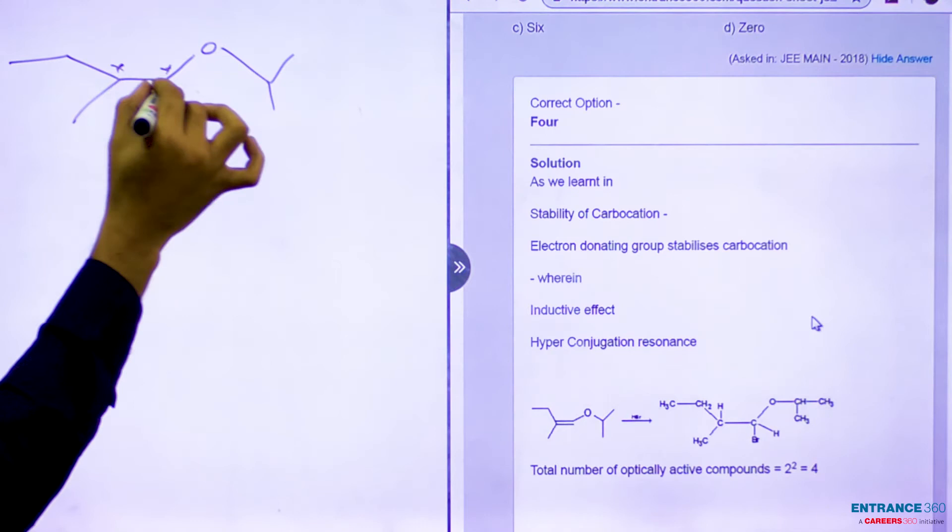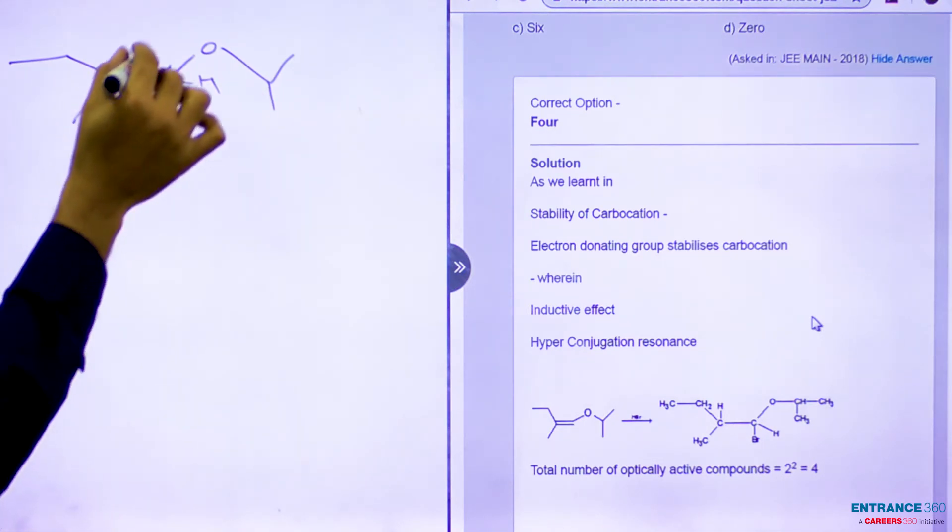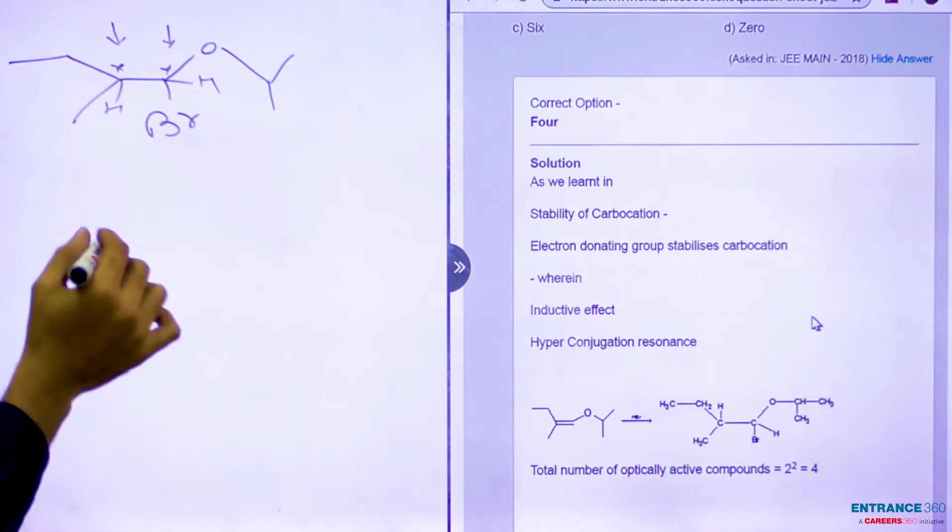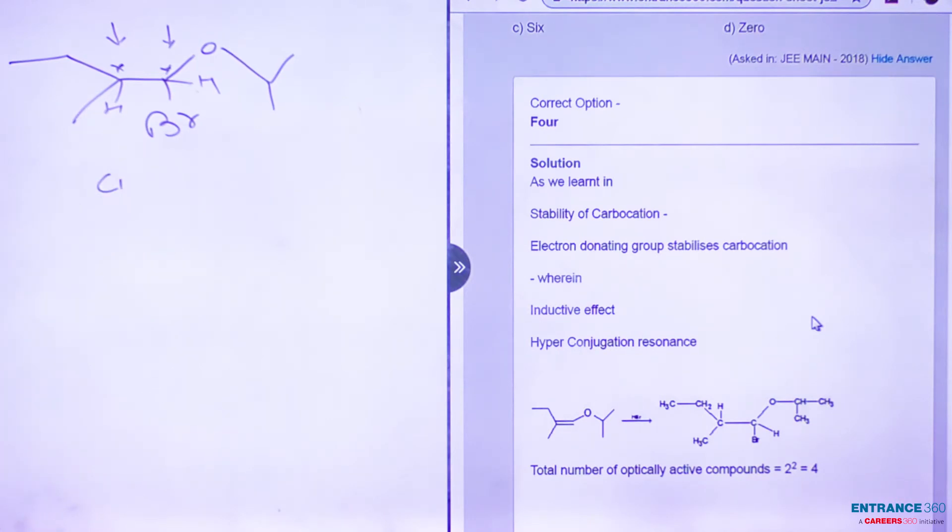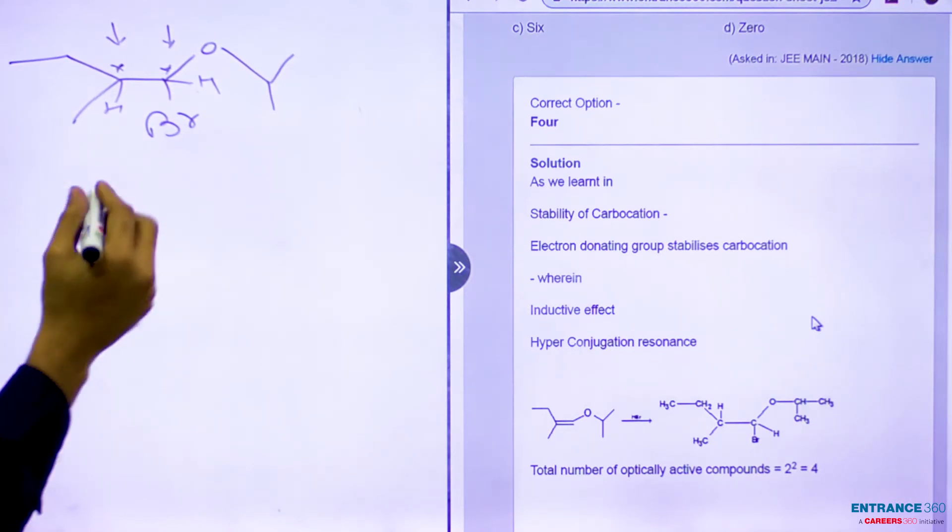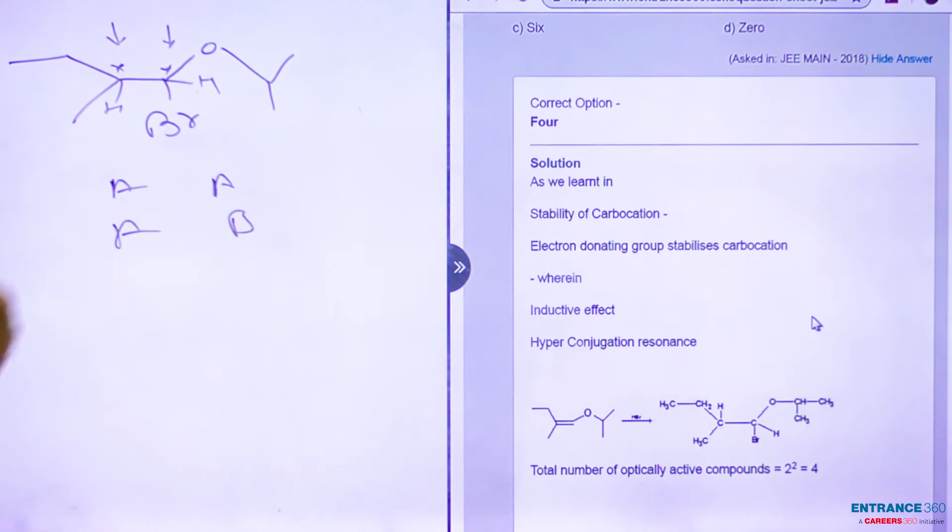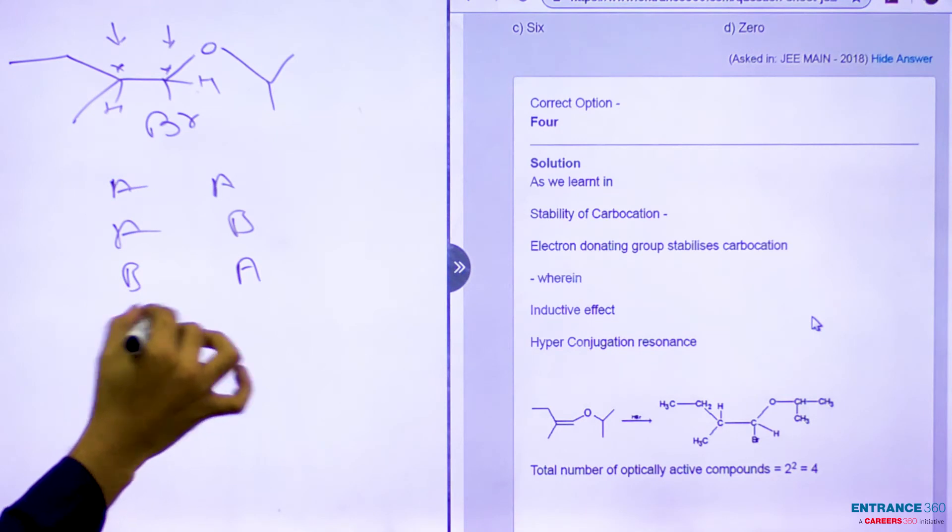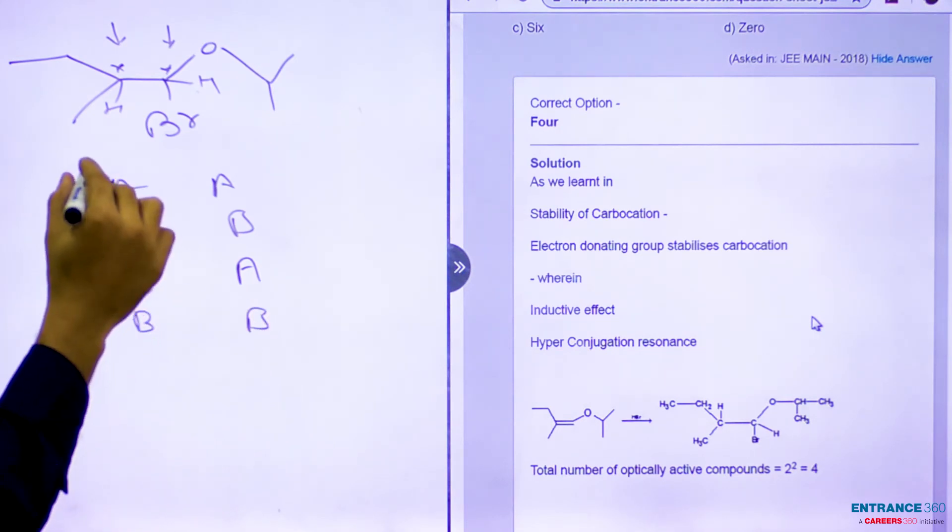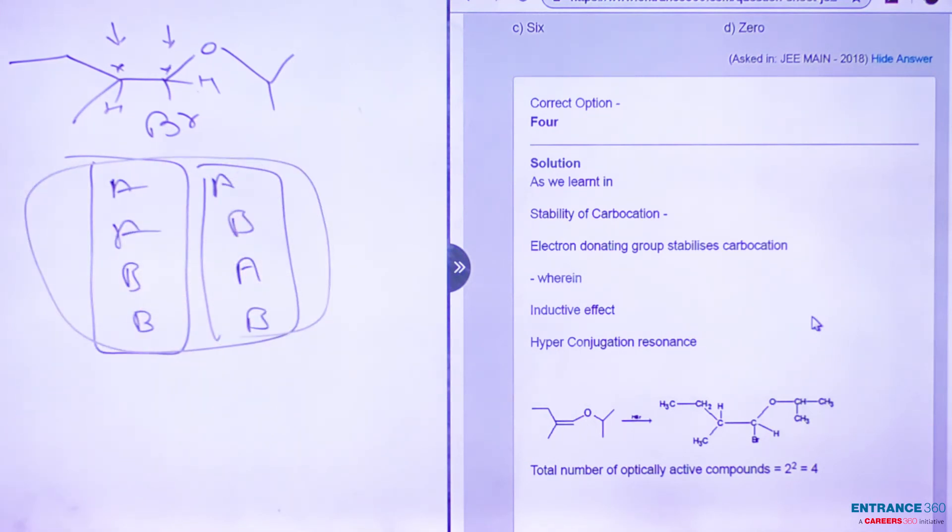So we have two chiral centers or carbons. If this is in one position, then this is another position. We have a and b positions. If this is b, this is a, and this is b, and this is b, so we have a total of four combinations of optically active compounds.